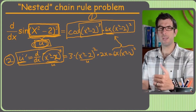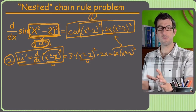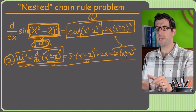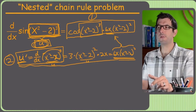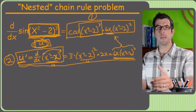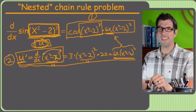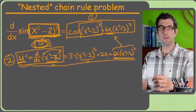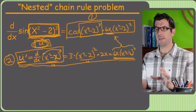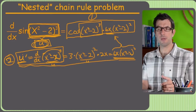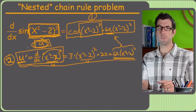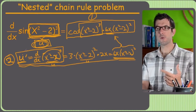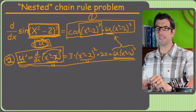Finding the derivative of the original u required using the chain rule again. When starting out, if u-prime is going to take chain rule, break it out into a separate problem in a separate spot. Once you get the answer for u-prime, plug it into the original. Once you do chain rule a million times — and if you're in calculus, you will — maybe you won't need to break it down separately. But to keep things neat and avoid forgetting steps, it's better to break it down and even number the chain rule passes.